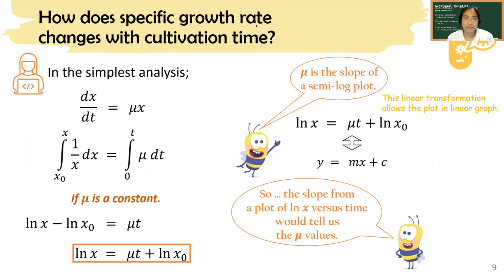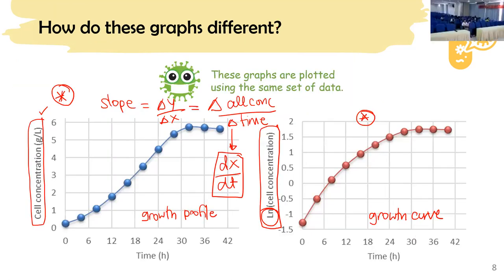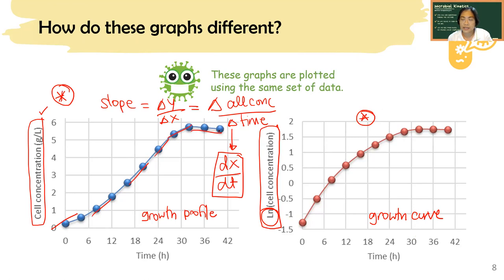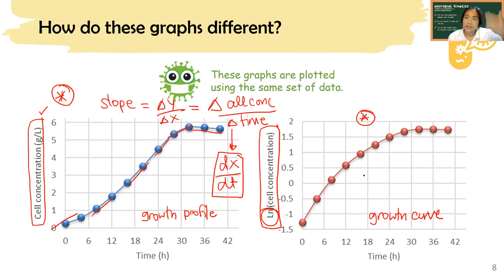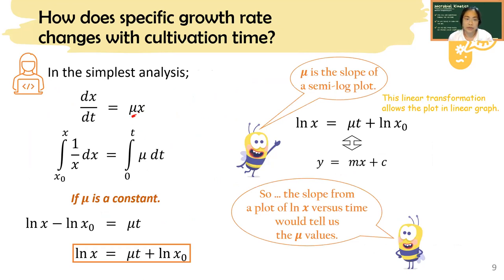I would like to talk a bit about how the specific growth rate changes with cultivation time. From this slide, you see that the rate changes throughout the fermentation time — the slope starts here, then increases, then increases, then decreases, and then it's stable. The slope on the growth curve changes as well, so over the fermentation period the growth rate of the cells changes, and so does μ. This is something every biotech student has to understand.